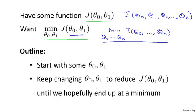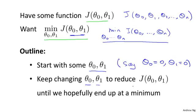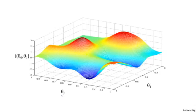Here's the idea for gradient descent. What we're going to do is start off with some initial guesses for theta 0 and theta 1. It doesn't really matter what they are, but a common choice would be to set theta 0 and theta 1 to 0 — just initialize them to 0. What we're going to do in gradient descent is keep changing theta 0 and theta 1 a little bit to try to reduce j of theta 0, theta 1, until hopefully we wind up at a minimum or maybe a local minimum. So let's see in pictures what gradient descent does. Let's say you're trying to minimize this function. Notice the axes: theta 0 and theta 1 are on the horizontal axis, and j is on the vertical axis. The height of the surface shows j, and we want to minimize this function. We're going to start off with theta 0, theta 1 at some point on the surface of this function.